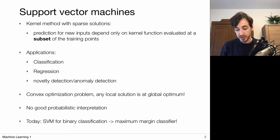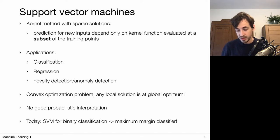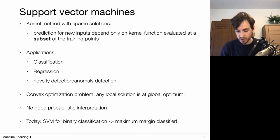Kernel methods can be very powerful because they can implicitly work with feature representations that can be infinite dimensional. But these kernel methods can also be somewhat slow because they base their predictions on an evaluation of the kernel function for all possible training points. Support vector machines base their predictions on only a subset of the training points.